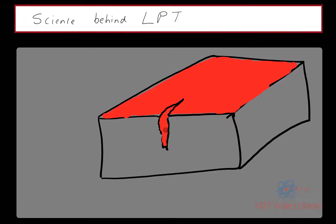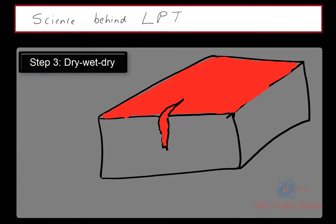Once the dwell time is over, you wipe the excess penetrant off using a dry-wet-dry method. First, wipe off the entire top surface using a dry lint-free cloth. Then, spray cleaner on the lint-free cloth—not on the top surface of the test block, but on the lint-free cloth—and use that wet cloth to wipe off the surface, making sure that you don't rub it too harshly and pull out the penetrant that's trapped inside the crack.